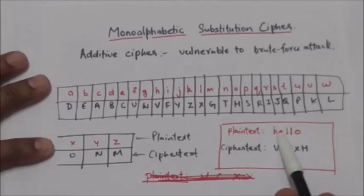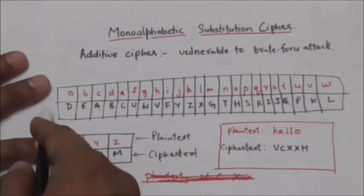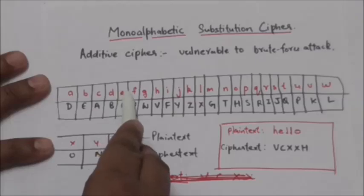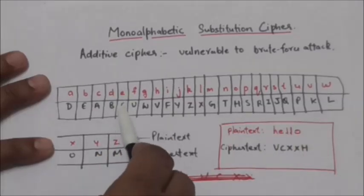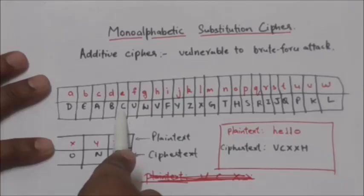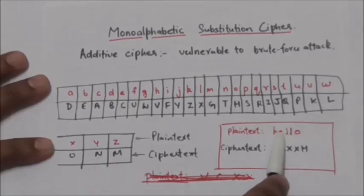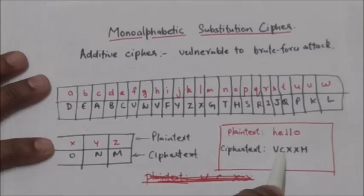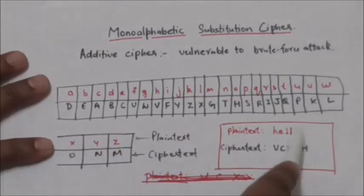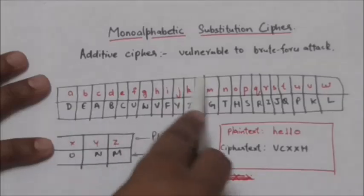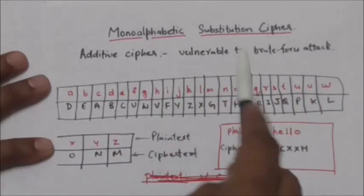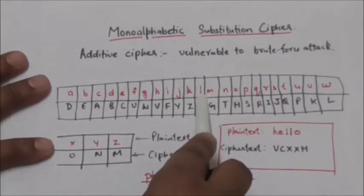The next plaintext character is E. From the table, the ciphertext character corresponding to plaintext E is C, so E will be encrypted to C. Similarly, the next characters are L, and according to this table, plaintext character L will be encrypted to ciphertext character X.